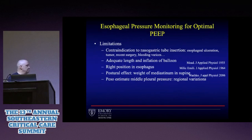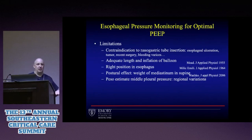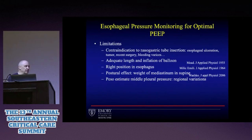Any contraindication to an NG or OG tube is going to apply to this esophageal pressure catheter as well — bleeding, trauma, various surgical events, or if your patient is hypercoagulated with coagulopathy or on ECMO. Anything that prevents a catheter going into place is going to apply here.